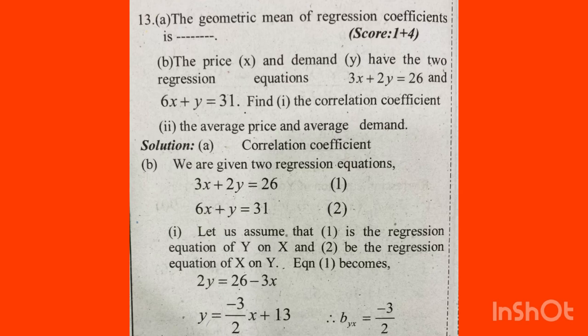The geometric mean of regression coefficients is the correlation coefficient. That is the correlation coefficient — that is the regression coefficients in the geometric mean. If you want to see the question, you will mark it.